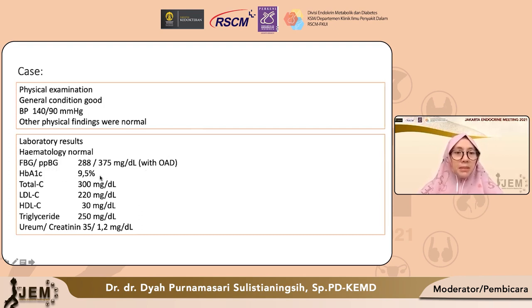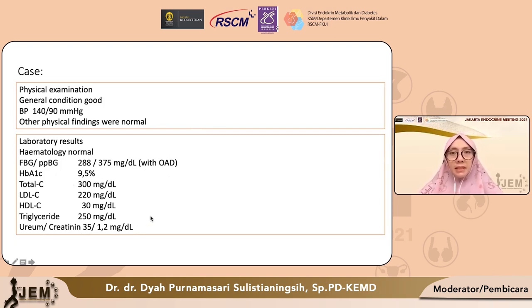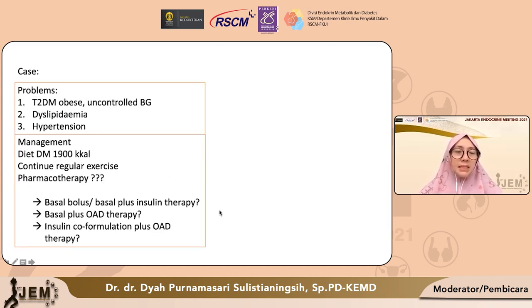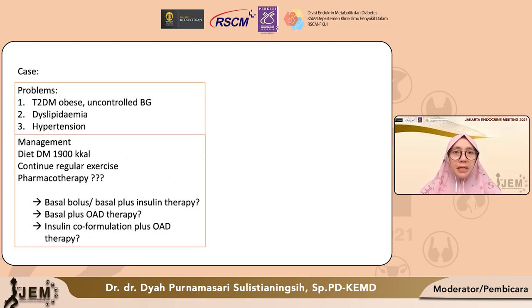HbA1c 9,5 dengan profil lipid yang belum terkontrol, dengan fungsi ginjal yang relatif masih baik. Jadi masalah yang ditegakkan pada pasien ini adalah diabetes tipe 2 dengan gula darah yang belum terkontrol, ada dislipidemia, dan hipertensi.